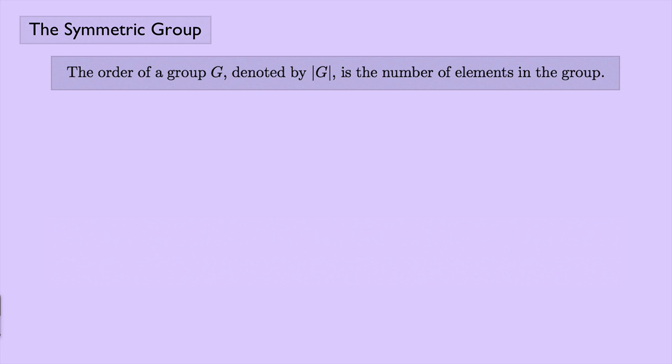The order of a group G, which we denote with what looks like little absolute value bars, is the number of elements in the group. So I want to point out that we said that S sub N was the symmetric group of degree N, but that doesn't mean that the order of S sub N is N.